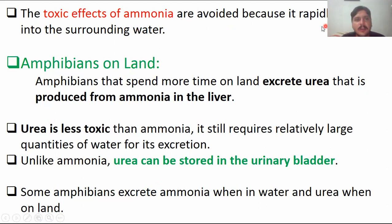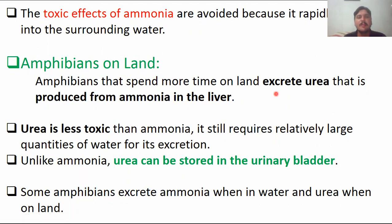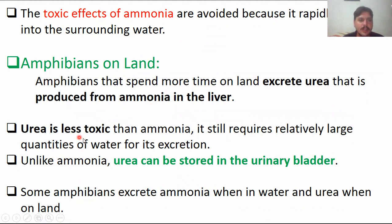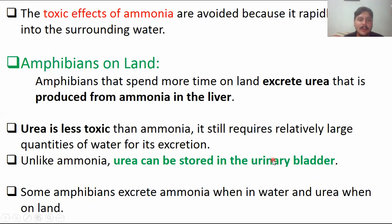The toxic effects of ammonia are avoided because it rapidly leaves into the surrounding water. Unlike ammonia, urea can be stored in the urinary bladder. Some amphibians excrete ammonia when in water and urea when on land — it depends upon the habitat of the organism.